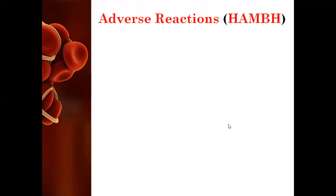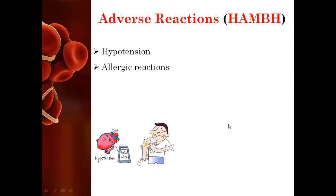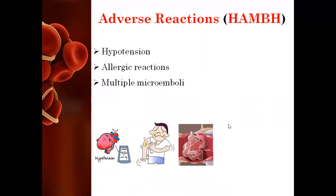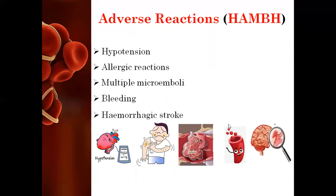The adverse reactions of fibrinolytics are summarized by the mnemonic HAM-BH. H stands for hypotension (decrease in blood pressure). A stands for allergic reactions. M stands for multiple microemboli — formed as the clot is broken down. B stands for bleeding, as these drugs lack specificity towards clotting factors like streptokinase, which can dissolve factors 5, 7, and 2, potentially leading to hemorrhagic conditions. H stands for hemorrhagic stroke, which is one of the severe adverse reactions of fibrinolytics.